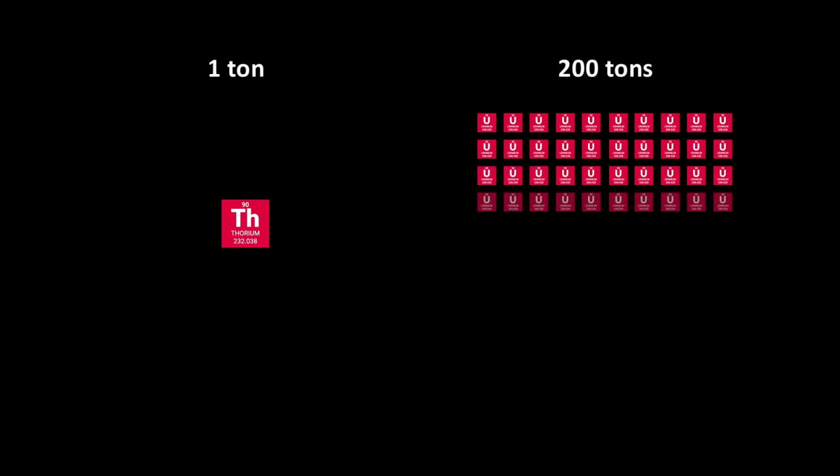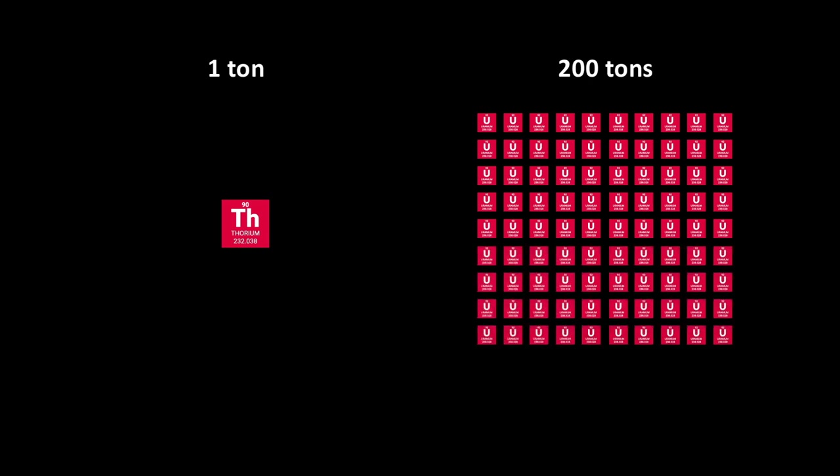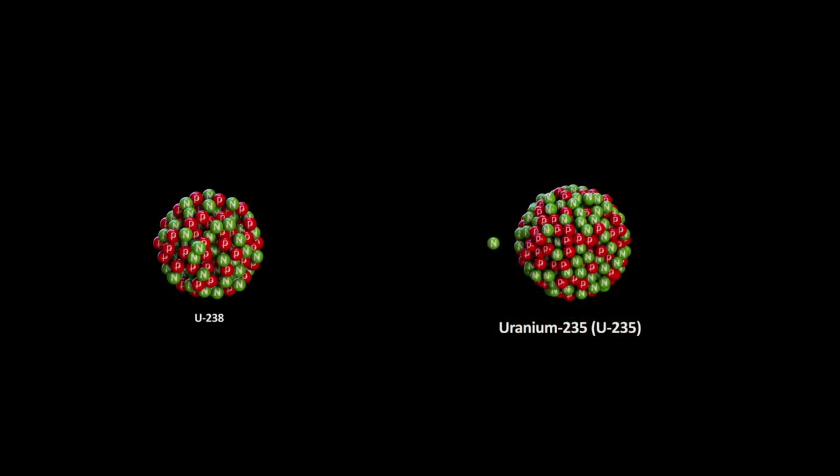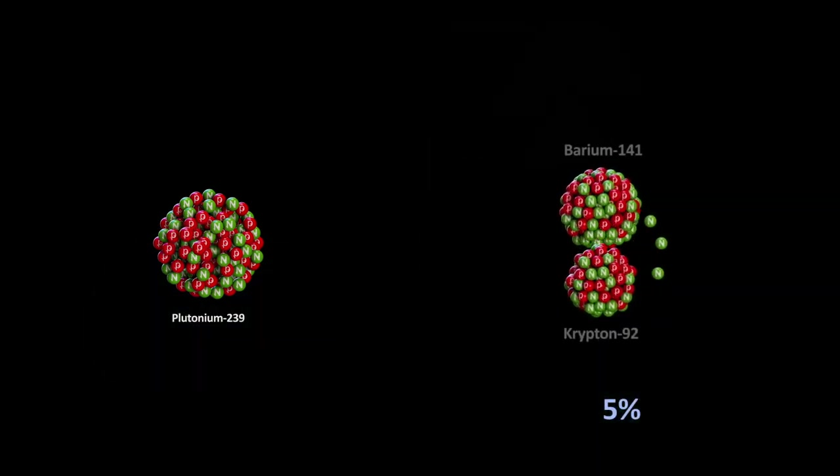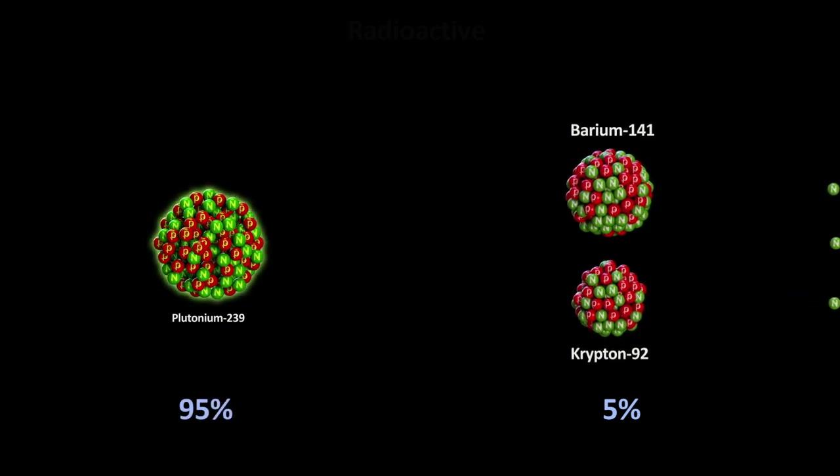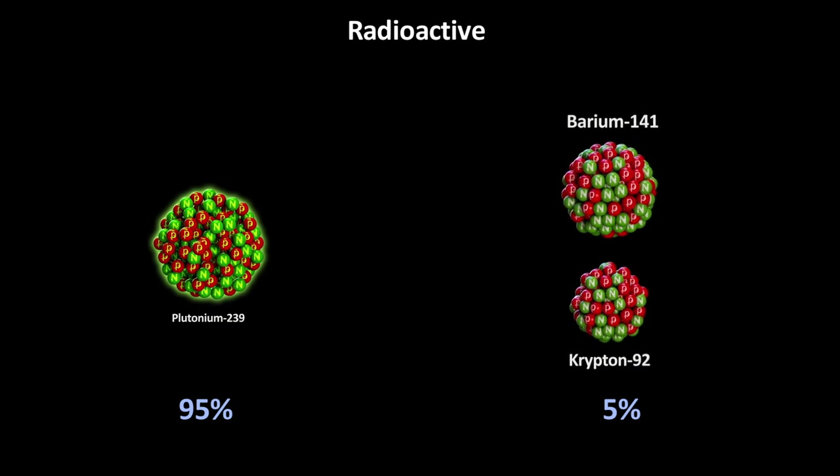Not only that, but we can also more effectively use thorium for fuel. It is estimated that one ton of thorium can produce the same amount of power as 200 tons of uranium. The reason for this is because even enriched uranium only contains about 3-5% U-235, which is the fissile part. The remaining 95-97% is not only wasted, but undergoes transmutation to become more dangerous. But with thorium, you end up using almost all of it for fuel.